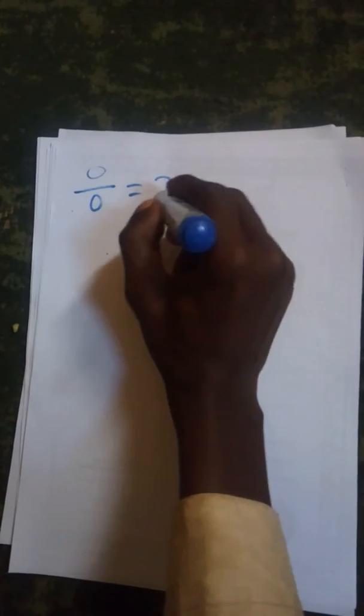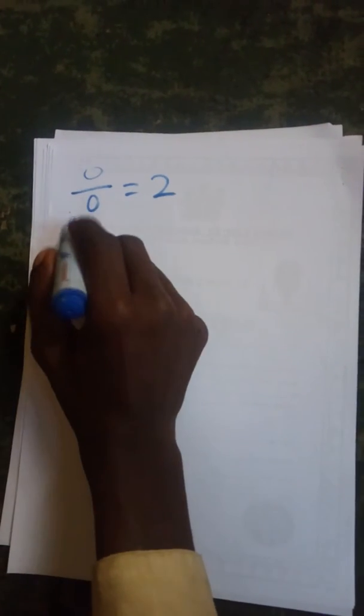Hello everyone, today I want to prove 0 divided by 0 equals 2. So as you all know,